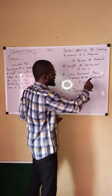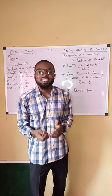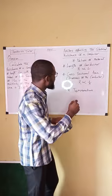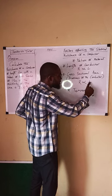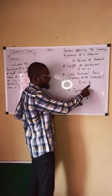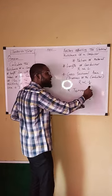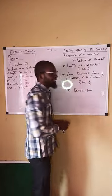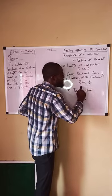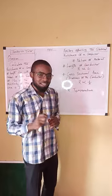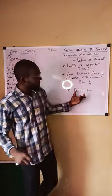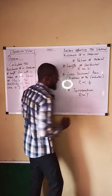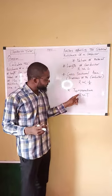Number three is the cross-sectional area — we are talking about the thickness of the conductor. The resistance is inversely proportional to the cross-sectional area. That means if the cross-sectional area increases, the resistance will decrease. And number four is temperature. The resistance is directly proportional to the temperature — if the temperature increases, resistance will increase.